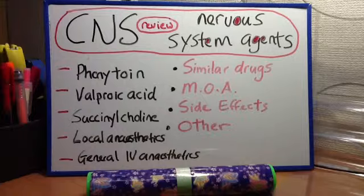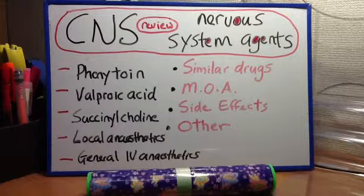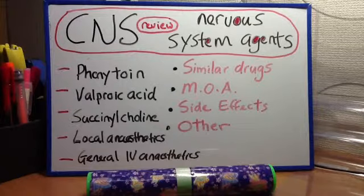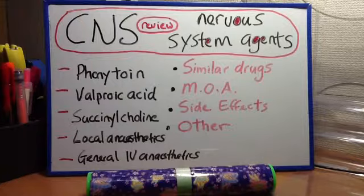Succinylcholine. MOA: depolarizing neuromuscular blocker that competes with acetylcholine to reversibly bind to the nicotinic receptors — phase 1 blockade and phase 2 blockade. Clinical uses: muscle paralysis for endotracheal intubation. Side effects include hyperkalemia.